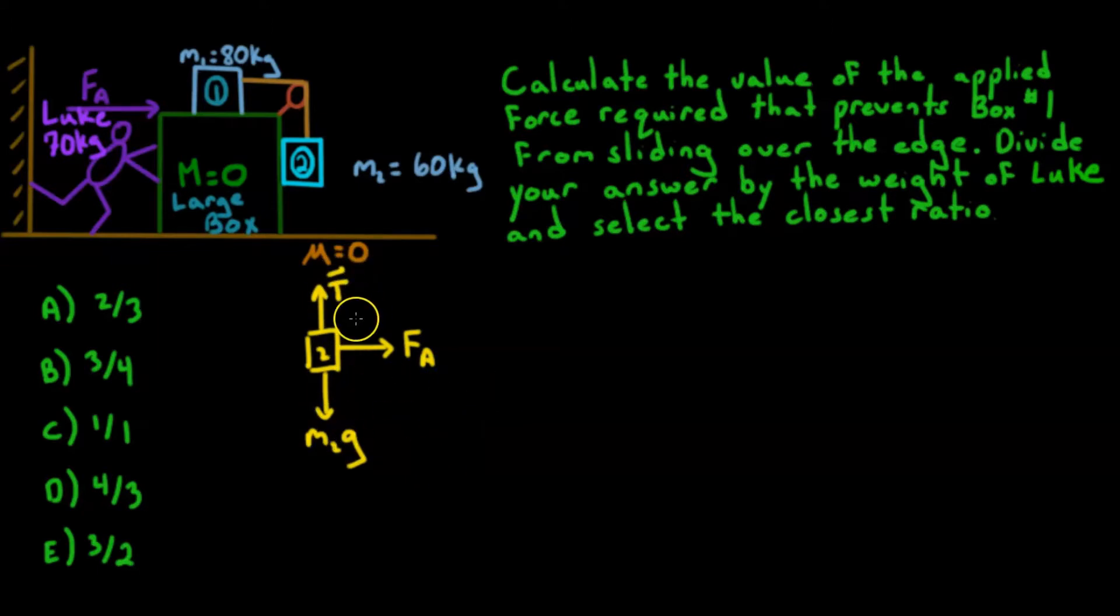Alright, so let's look at the sum of all forces. I'm going to look at it in y, because I want to know what that tension actually is. So the sum of all forces in y equals its mass times the acceleration in y. Now the acceleration in y is actually going to be zero. Why is it going to be zero?